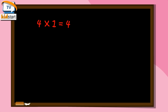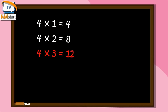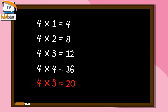Four ones are four. Four twos are eight. Four threes are twelve. Four fours are sixteen. Four fives are twenty.